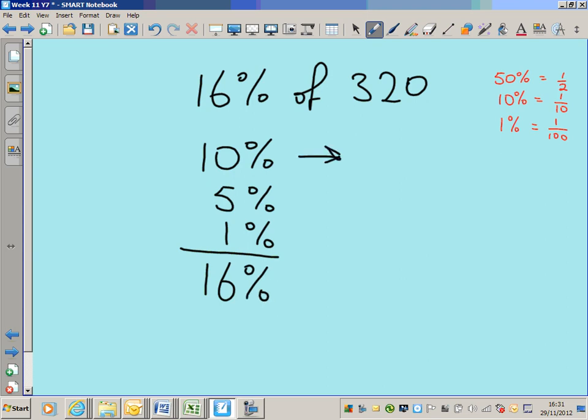10% of 320 is 320 divided by 10, which is 32. Half of 32 will give us 5%, and that's 16. And 1% of 320 is 320 divided by 100. Move the decimal point two spaces to the left to divide by 100, which gives 3.2. Line up the numbers carefully so that you can add them up without mistake.